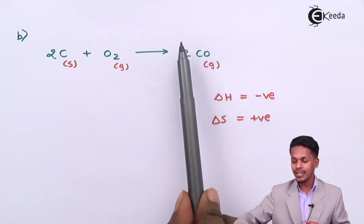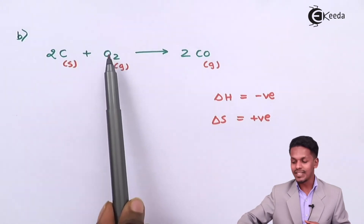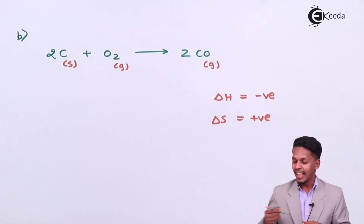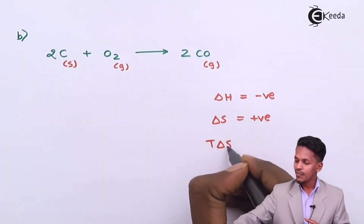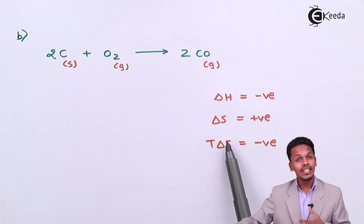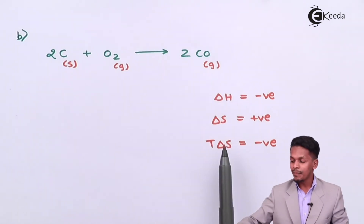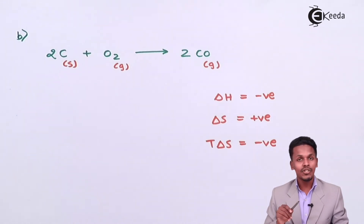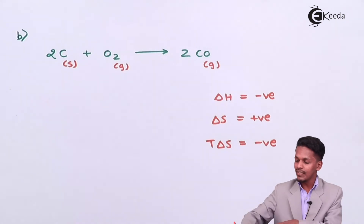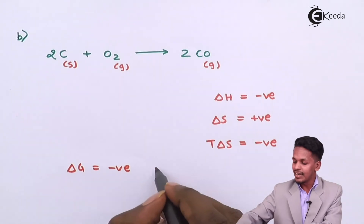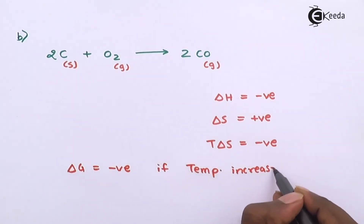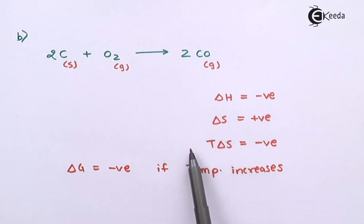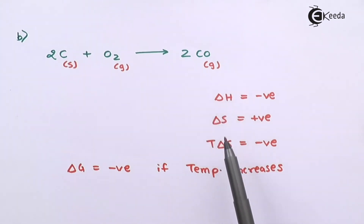The number of moles of gaseous product is 2, while the number of moles of gaseous reactant is 1, so delta S is positive. In the formula delta G = delta H − T·delta S, since delta H is negative and delta S is positive, the term T·delta S is also positive, making −T·delta S negative. Therefore delta G will be negative and will become more negative as temperature increases. So at higher temperature, the formation of CO becomes more favorable.